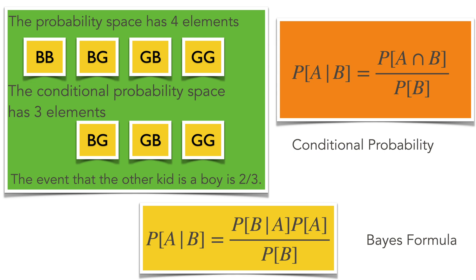The formula for conditional probability is a definition, and Bayes' formula, shown in yellow, immediately follows from that definition.